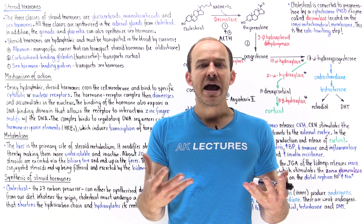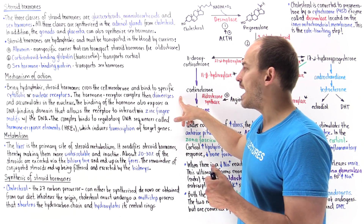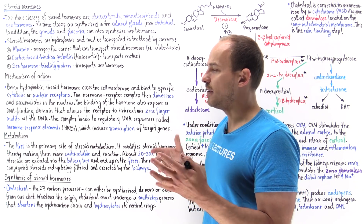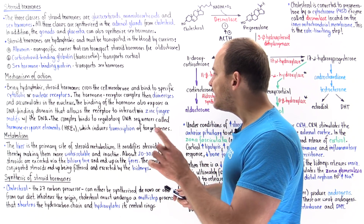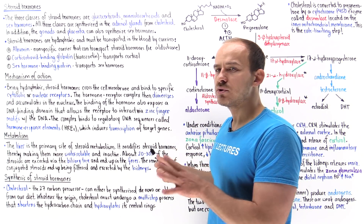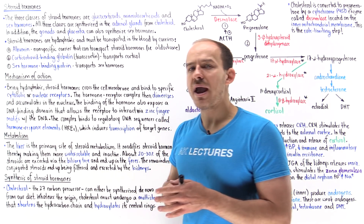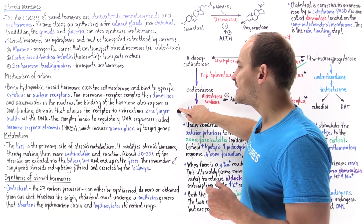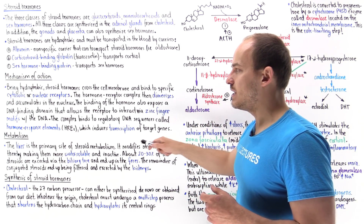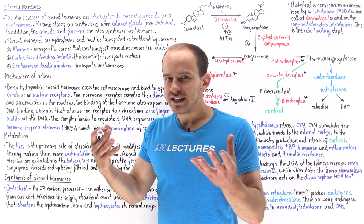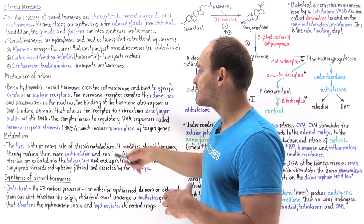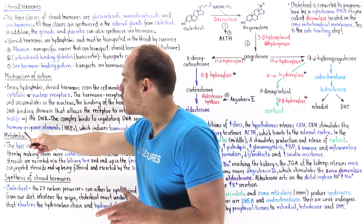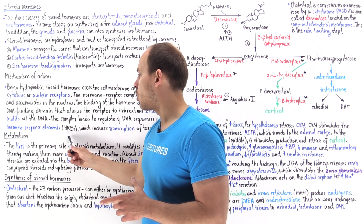Once inside the cell, the steroid hormone binds to receptors either in the cytoplasm or in the nucleus. Either way, once bound to the receptor, it causes dimerization and the complex accumulates within the nucleus. Binding of the hormone also exposes a DNA binding domain on the receptor, allowing it to interact via a zinc finger motif with the DNA. Specifically, the dimerized complex binds onto the regulatory DNA sequence known as the hormone response element, or HRE.